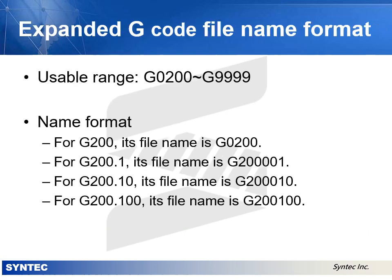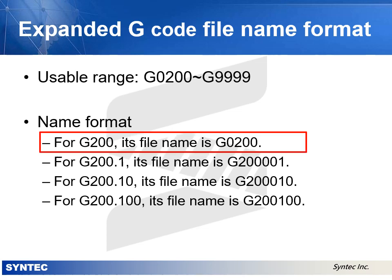The file name of the expanded G-code must conform to the required name format so that the controller can correctly identify it. According to the previous example, the file name will be G0300. Note that there are four digits after G.